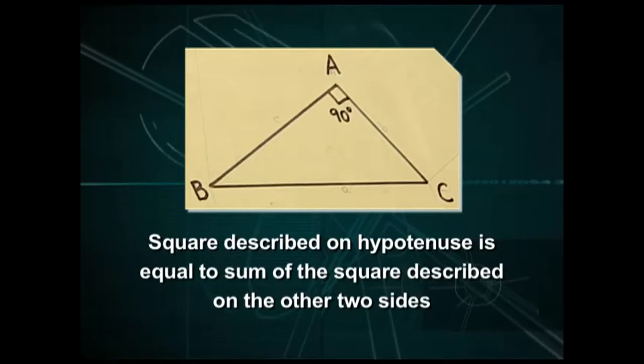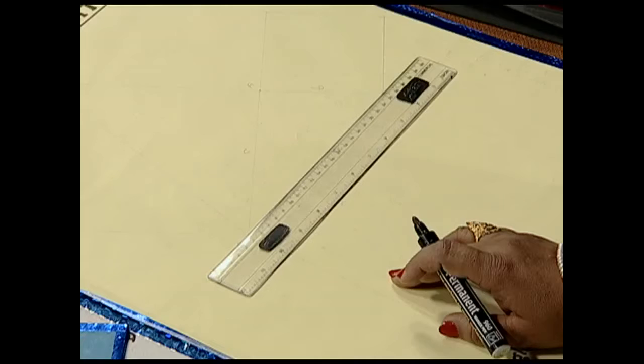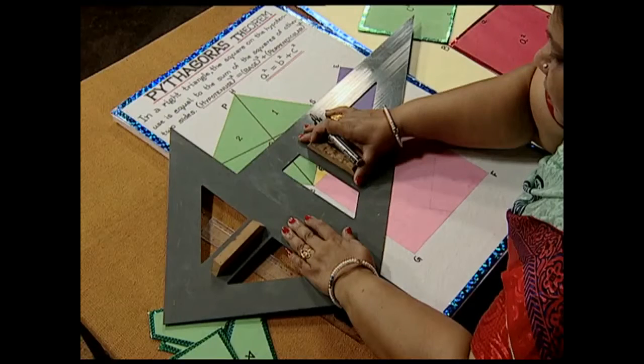For this, we require some materials like cardboard, colored chart papers, ruler, pair of scissors, and pair of set squares.